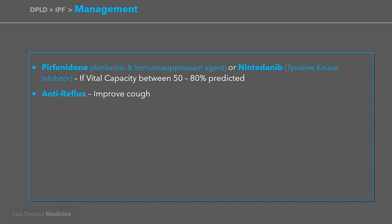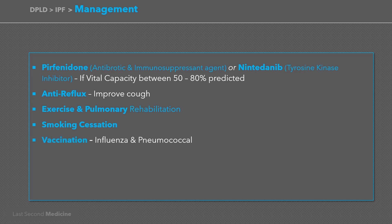Medication to control gastroesophageal reflux may improve cough. Patients should be encouraged to exercise and participate in pulmonary rehabilitation using ambulatory oxygen if appropriate. Current smokers should be advised of the increased risk of lung cancer and encouraged to stop smoking. Influenza and pneumococcal vaccination should be recommended. Domiciliary oxygen, also known as long-term oxygen therapy or LTOT, should be considered for palliation of breathlessness in severe cases, and where appropriate, lung transplantation should be considered.